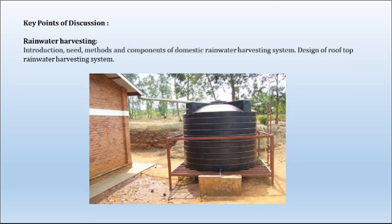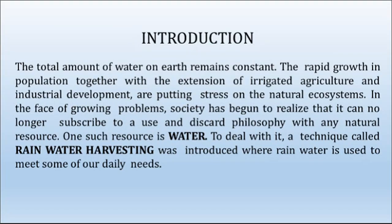We will start with introduction. The total amount of water on earth remains constant. The rapid growth of population together with the extension of irrigated agriculture and industrial development are putting stress on natural ecosystems. Society has begun to realize that it can no longer subscribe to a use-and-discard philosophy with any natural resource — one such resource is water. To deal with it, a technique called rainwater harvesting was introduced where rainwater is used to meet some of our daily needs.